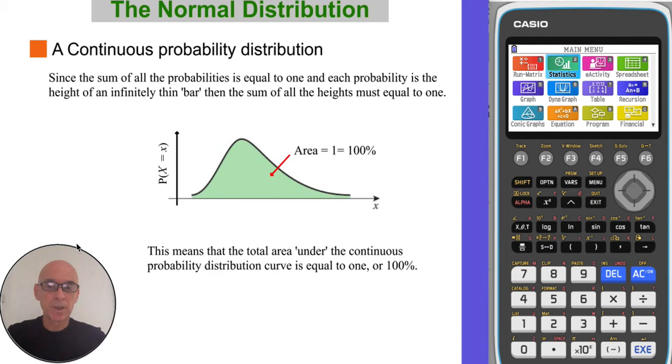Since the sum of all the probabilities is equal to one, and each probability is the height of an infinitely thin bar, the sum of all these heights must equal one. This means that the total area underneath the continuous probability distribution curve must be equal to one, or 100%.